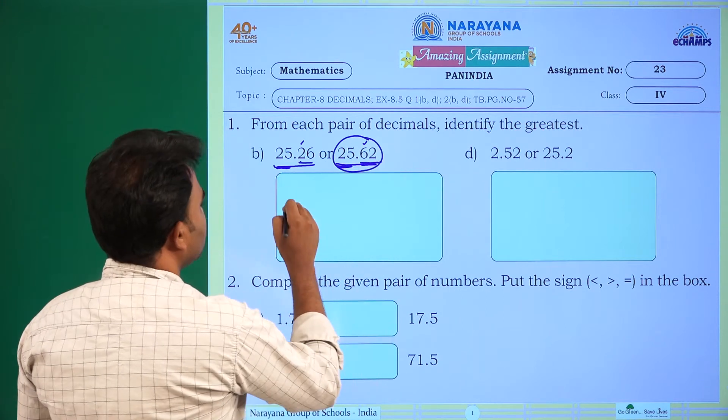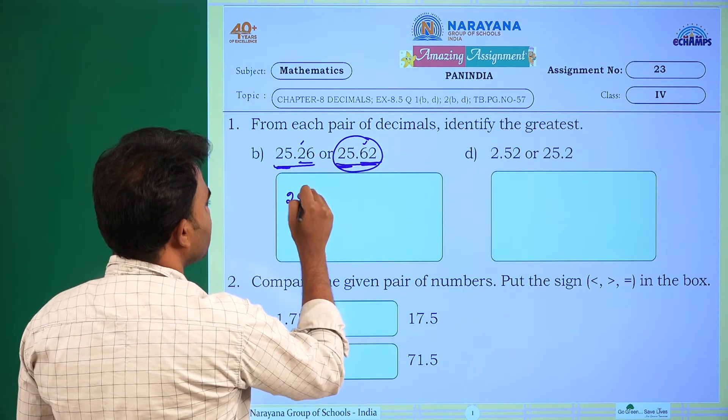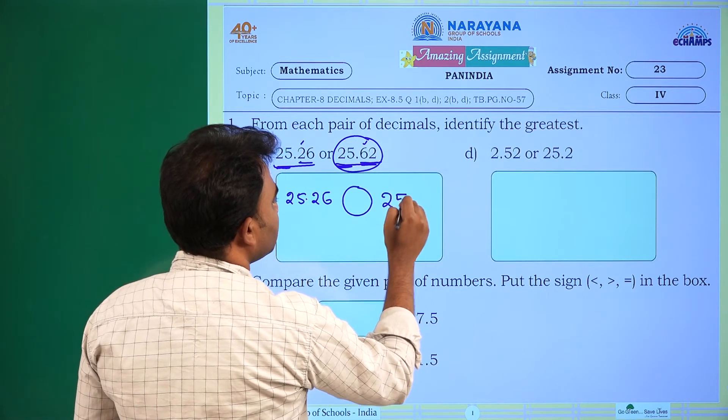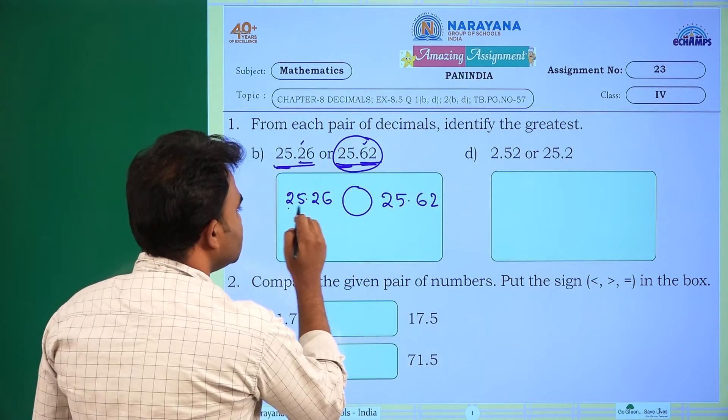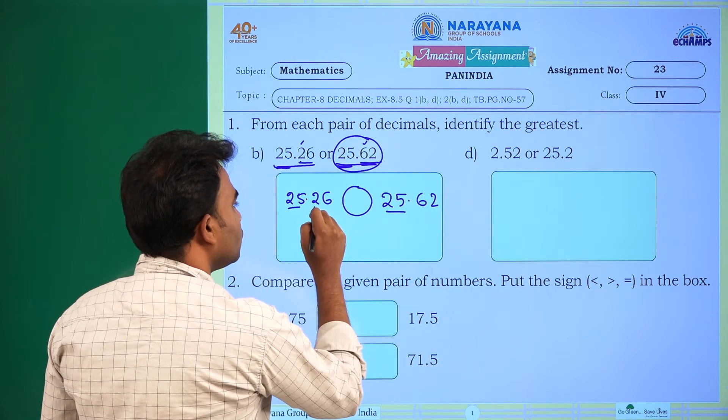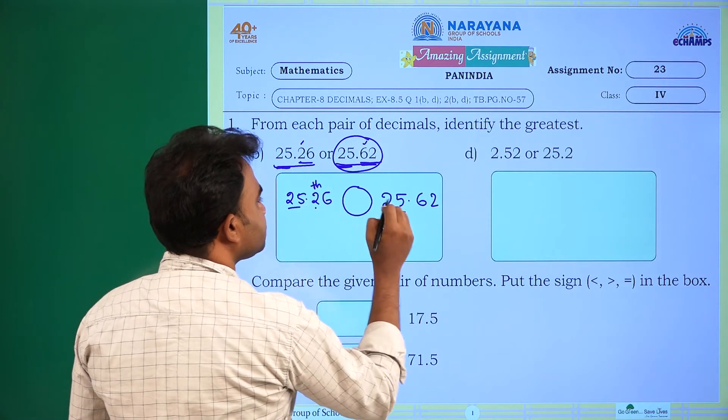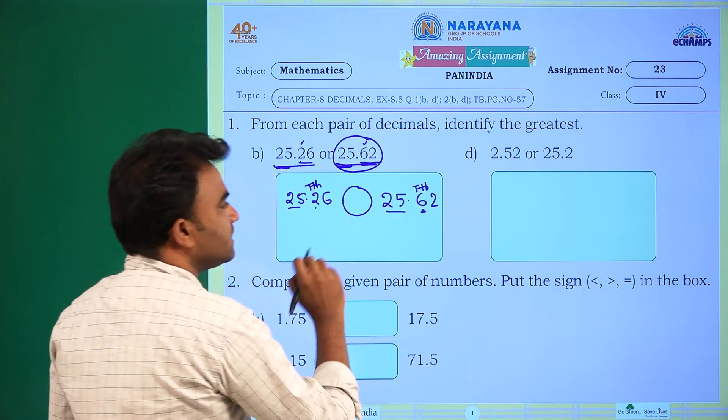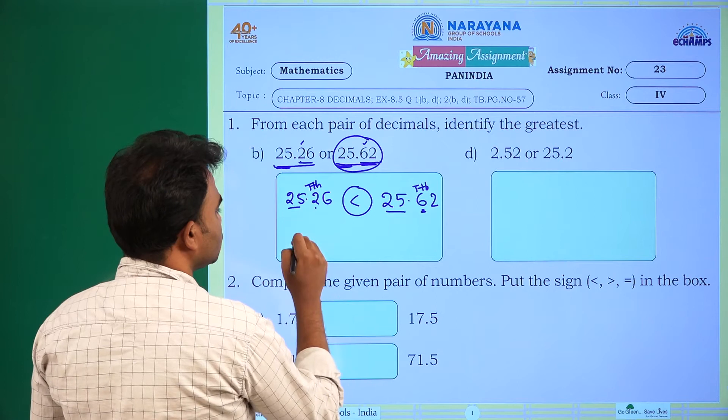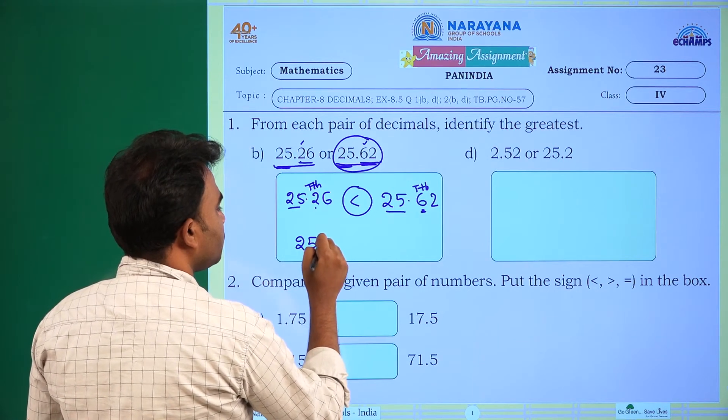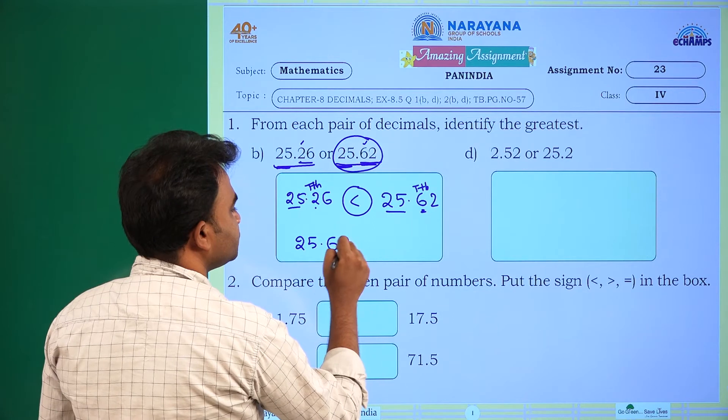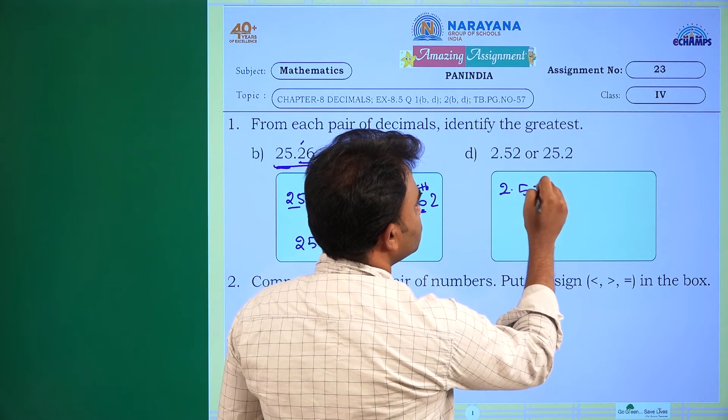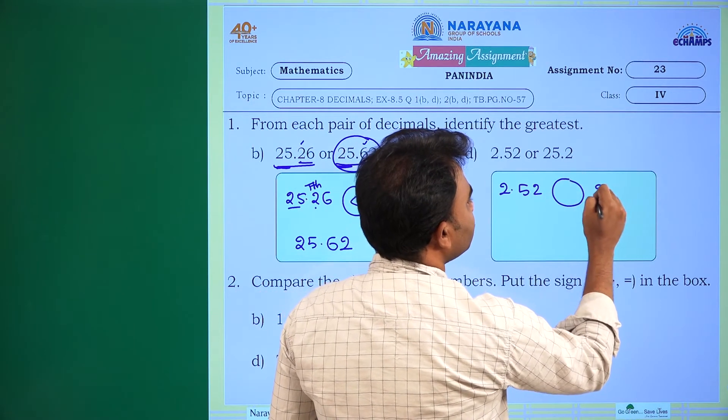So 25.26 and 25.62, as these two are same, we are going with 10th place. In 10th place here 6 we have, so this is greatest. The greatest one is 25.62 and the next one 2.52 and 25.2.